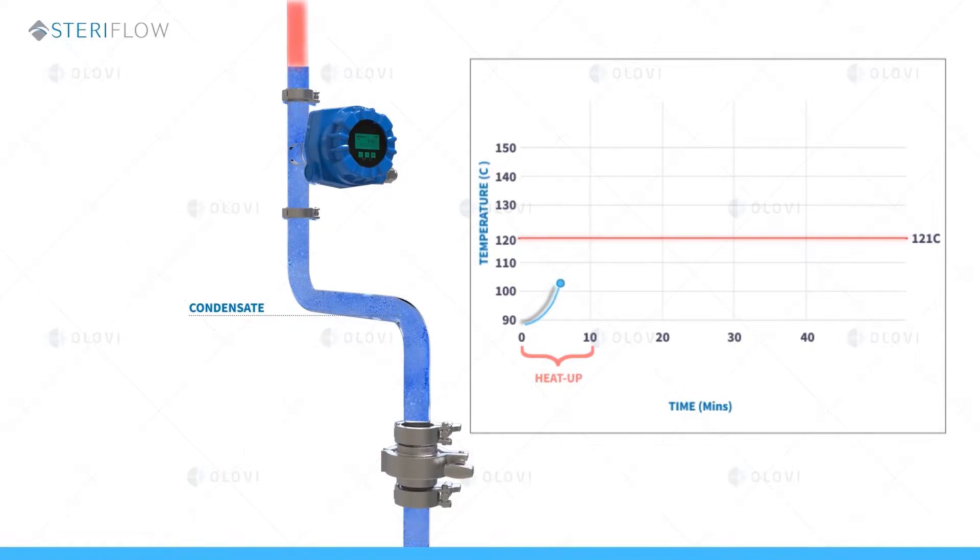As the system heats up closer to 121°C, less steam is required and the amount of condensate produced lessens. Heat up ends when the system temperature reaches 121°C, which coincides with the condensate levels falling below the level of the temperature sensor.